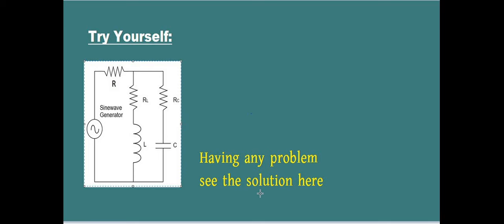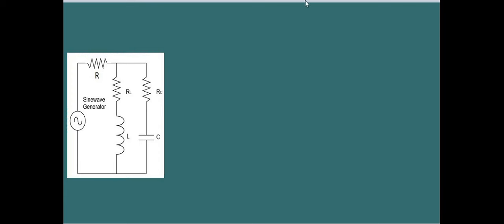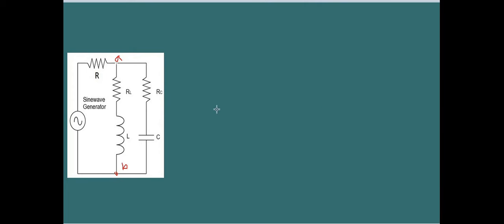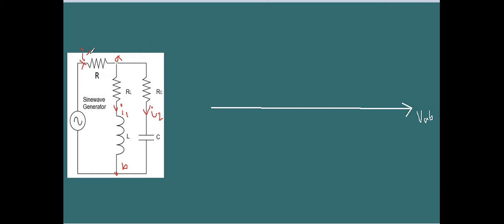Hello, once again. For the solution of this circuit, let us first denote this terminal as A and this terminal as B, and let us take voltage Va as a reference voltage. Let this current be I2, this current be I1 as we've done before, and this current is I.